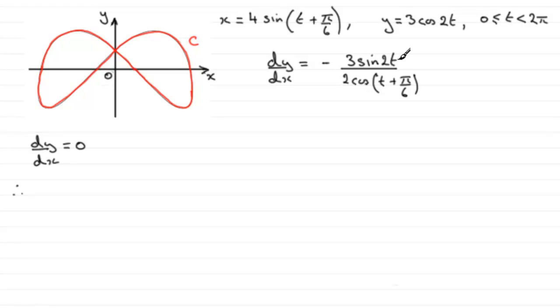it must be that the top of the fraction, the numerator, must equal zero. Because if we put this equal to zero and times both sides by the denominator, we just have minus three sine two t equals zero. So that's where I'm going to start. Therefore, minus three sine two t must equal zero.